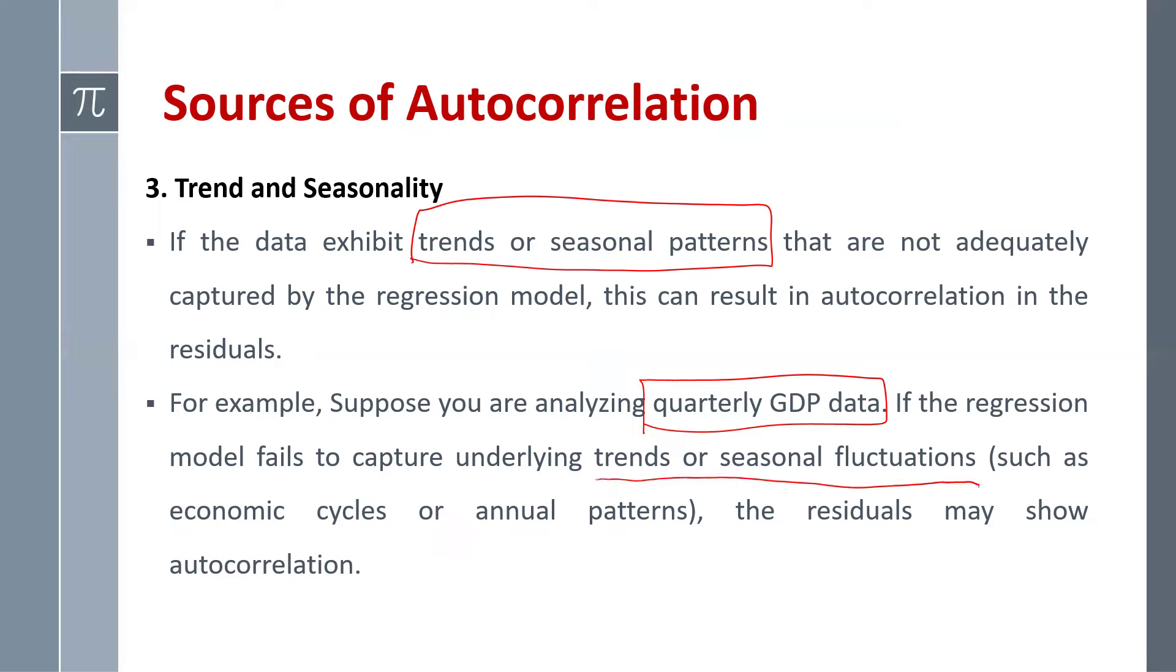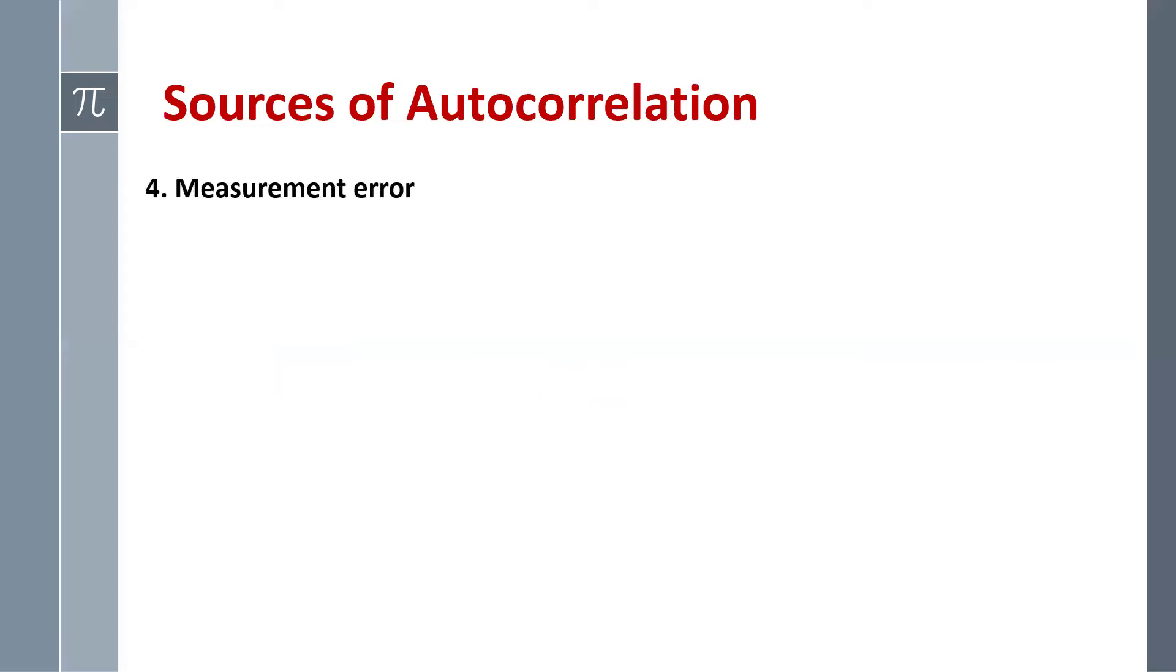Fourth is measurement error. So measurement errors arise due to the use of an imperfect measure of true variable.